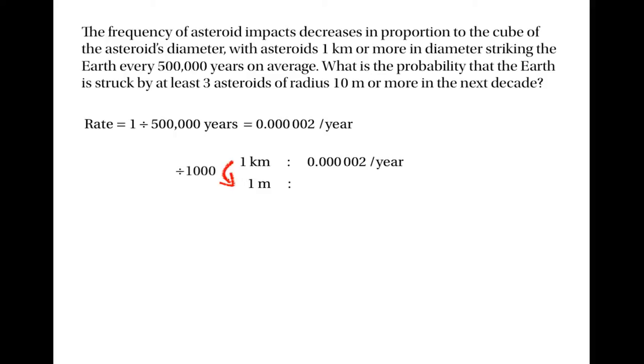Well, here we've decreased the diameter by a factor of 1,000. But we're told that the rate is inversely proportional to the diameter. So if we've decreased the diameter, we need to increase the rate. In fact, we're told that if we decrease the diameter by an amount, we need to increase the rate by the cube of that amount.